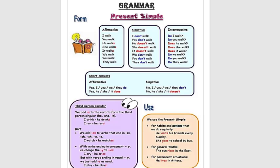As we can see here, we have three forms of the present simple tense: the affirmative form, the negative form, and the interrogative form. Let's check the affirmative form: I walk, you walk, he walks, she walks, it walks, we walk, you walk, and they walk.